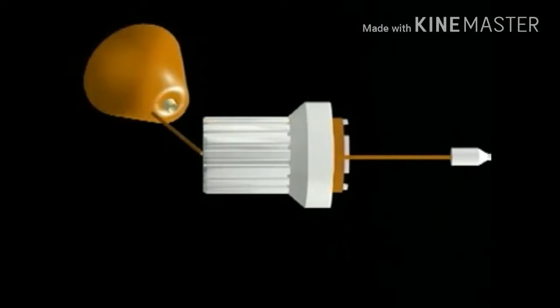Weft to insert is stored on packages in the weft creel. The measuring drums, one for each channel, pull and store weft from the packages.